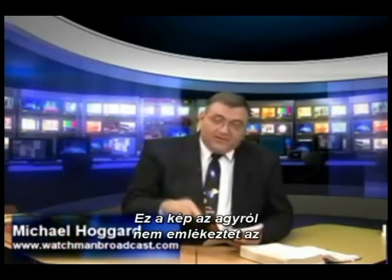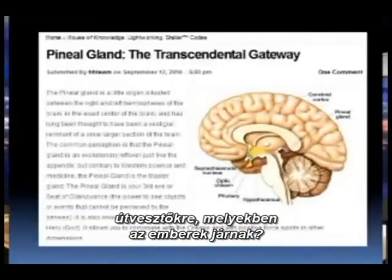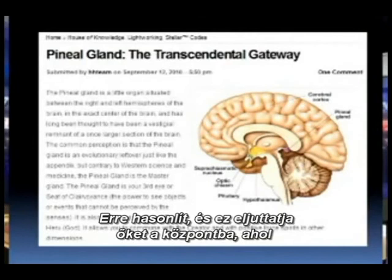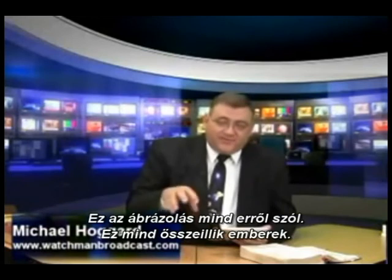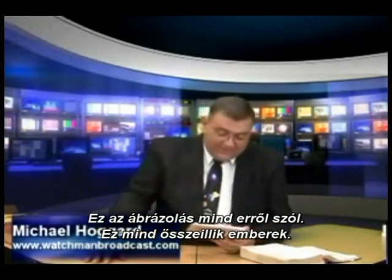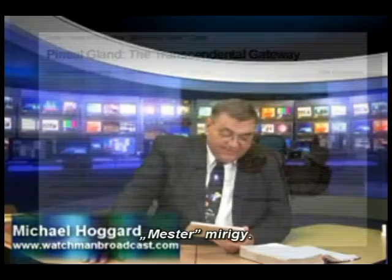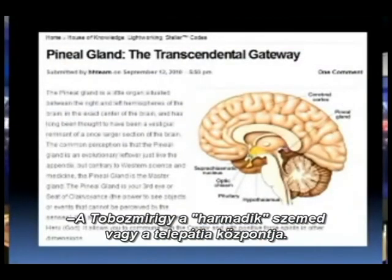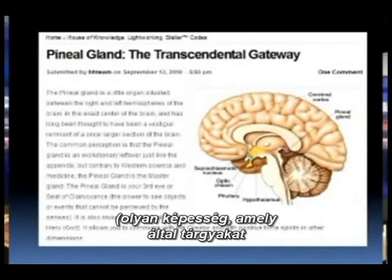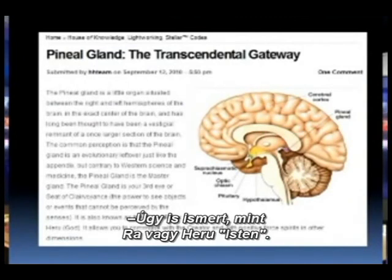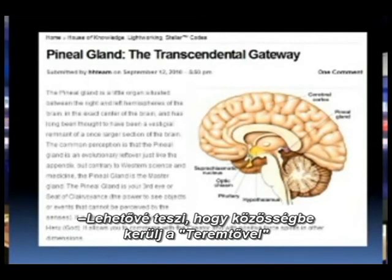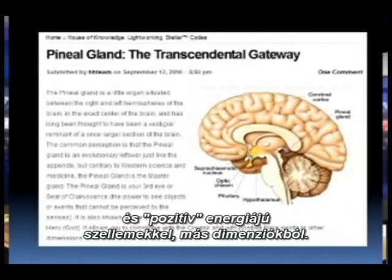The New Age people believe that the pineal gland is the absolute most important part of your brain, and it's right in the center. And if you look at this image of the brain — remember those mazes that people walk? That's what that looks like. And it's getting them to the center point where the half-man, half-beast — the centaur — is located, and he needs to be freed. That's what this imagery is all about; it all connects together. But anyway, the pineal gland is your third eye, or seat of clairvoyance — the power to see objects or events that cannot be perceived by the senses. It is also known as the eye of Ra or Heru, which they call God. It allows you to commune with the Creator and with positive forces in other dimensions.